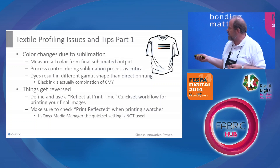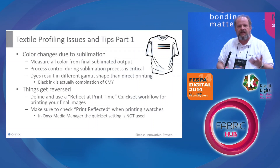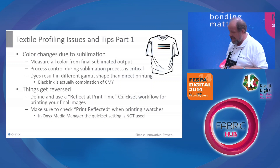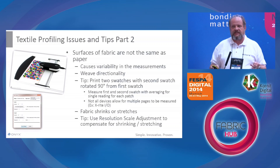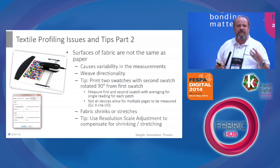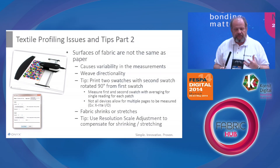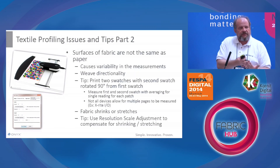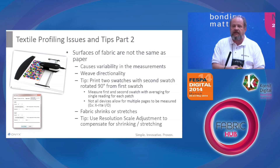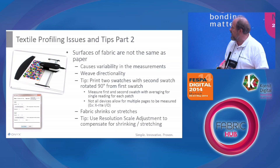When doing the profiling process with our software, the key thing is that you need to say 'print reflected' even on the swatches you print. Also, as I've mentioned, the surfaces of the fabric aren't the same — they're all over the place. This can cause great variability in your measurements, and there's weave directionality. So if you're going to be doing this, you really need to print out your color swatches multiple times in different orientations, measure them, and then average the result to get a basic average idea of the color. By taking multiple measurements, you get more of a feel for the actual behavior of the color and the media.